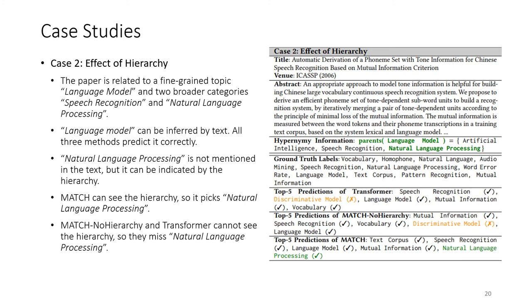In the second case, the paper is related to a fine-grained topic, 'language model,' and two broader categories, 'speech recognition' and 'natural language processing.' Here, 'language model' is specifically contained in the text, so all three methods can predict it correctly. However, 'natural language processing' is not mentioned, but it can be indicated by the hierarchy information. Here, MATCH can see the hierarchy, so it picks natural language processing.